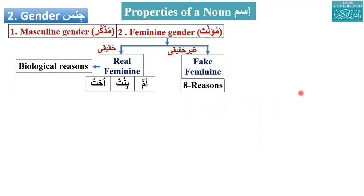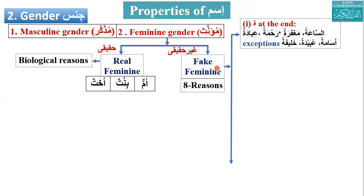If it follows certain rules, it would be considered feminine, or mu'annath. Muzakkar is masculine and mu'annath is feminine. There are two kinds of feminine nouns: one is called real feminine — hakiki — and the other is called fake feminine — ghayr hakiki. Real feminine is due to biological reasons, like mother, daughter, sister. Fake feminine can have eight reasons.